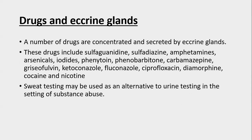A number of drugs are concentrated in the eccrine glands, including sulfonamides, sulfadiazine, amphetamines, arsenicals, iodides, phenytoin, phenobarbitone, carbamazepine, griseofulvin, ketoconazole, fluconazole, ciprofloxacin, diamorphine, cocaine, and nicotine. Sweat testing may therefore be used as an alternative to urine testing in settings of substance abuse.